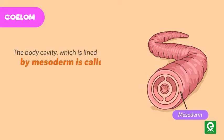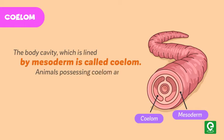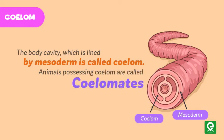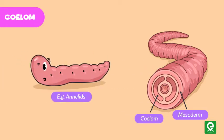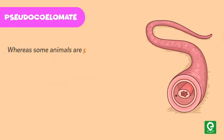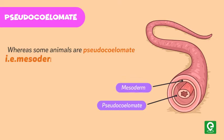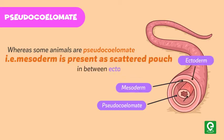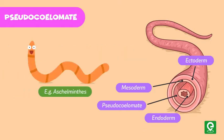Coelom: the body cavity which is lined by mesoderm is called coelom. Animals possessing coelom are called coelomates — example: annelids. Animals in which the body cavity is absent are called acoelomates. Some animals are pseudocoelomates, where mesoderm is present as scattered pouches in between ectoderm and endoderm — example: aschelminthes.